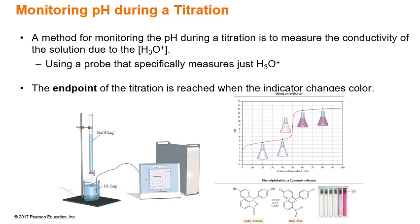There are lots of different ways that we can monitor the pH during a titration. Some methods we've already looked at are using indicators, where the color changes based on the pH of our solution. We either have an indicator in the acidic form or in the basic form, which is a different color. This particular example is phenolphthalein, where in the acidic form it's clear and in the basic form it becomes a fuchsia or pink color.